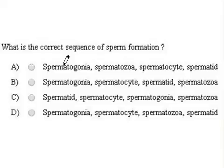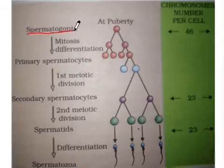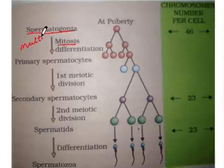In this question we have to identify the correct sequence of stages during sperm formation or spermatogenesis. The first stage is spermatogonia, which are formed after the multiplication phase. These spermatogonia then grow and change into the primary spermatocytes.